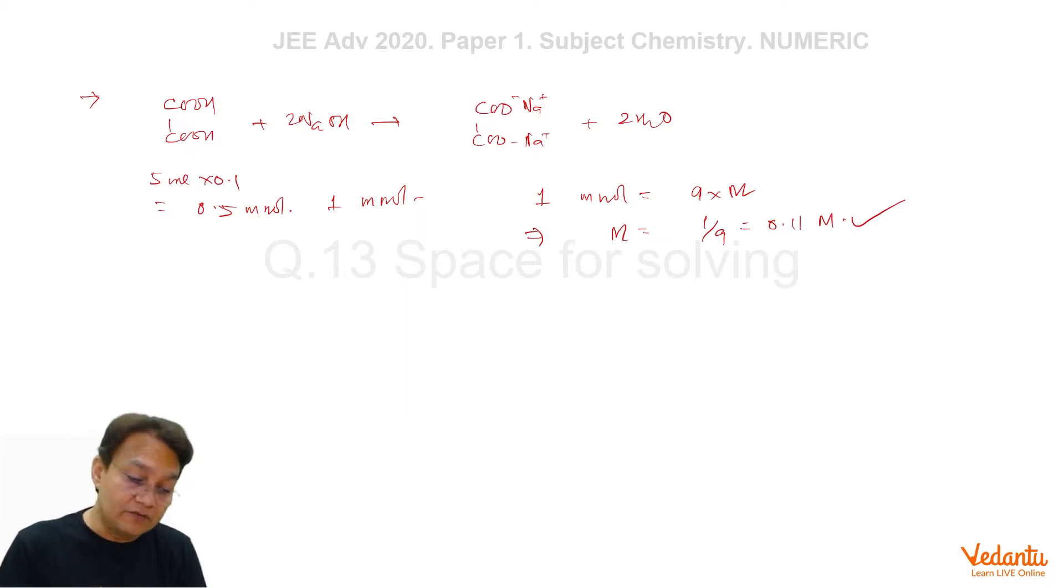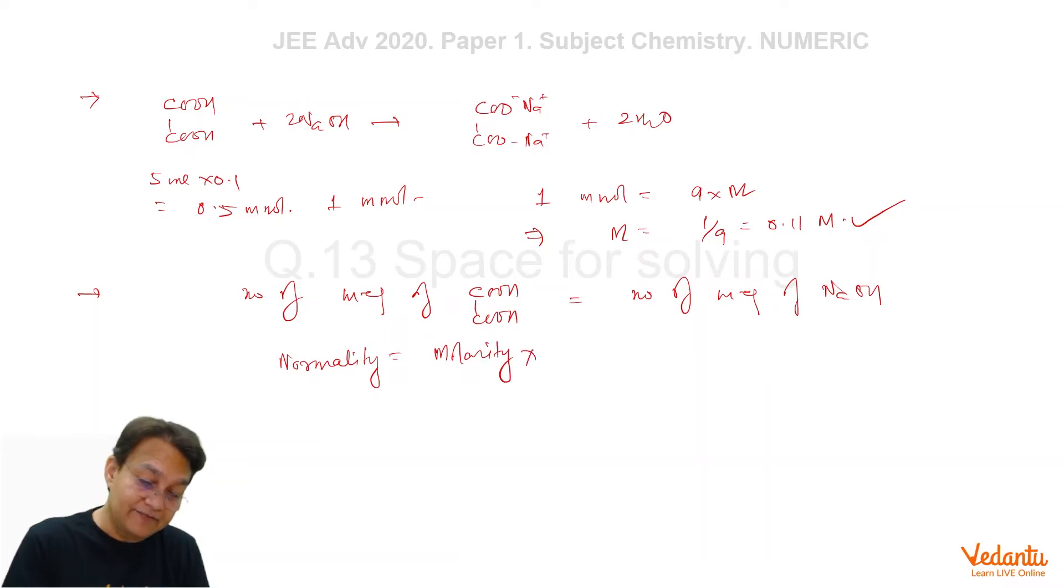So if you solve it by the equivalent method, then you have to use the fundamental that number of milliequivalents of COOH-COOH, that is oxalic acid, is equal to number of milliequivalents of NaOH. And the normality of oxalic acid solution should be, as you know the formula, normality equals molarity times N factor of COOH-COOH, that is equals to 2.